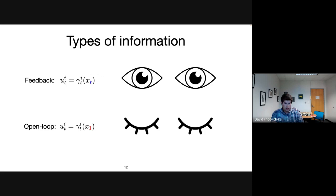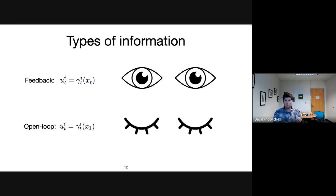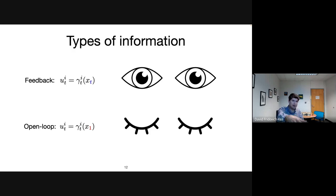There are two polar-opposite information structures. Feedback: everybody knows the full state at time t — like playing chess where you get to see the board before making a move. Open loop: each player only knows the time and the initial state — like playing chess with your eyes closed. The implications for trajectories are not obvious just from the equations, so let me show two examples of how radically different these can be.